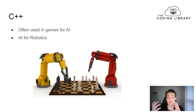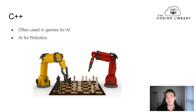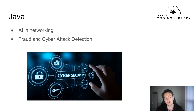C++ is often used for robotics and games where AI is involved. You can also use it when you need speed and efficiency for neural networks. A lot of the Python libraries are actually implemented in C++, so you can use those libraries and modules in C++ as well. A close alternative to C++ is Java — you can do a lot of the same things with both languages.